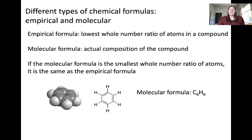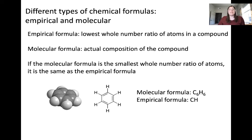This is not the same as the empirical formula in this case because it can be reduced. In other words, we can divide the number of carbons and the number of hydrogens both by a common value, 6. In doing this, we obtain the empirical formula of CH.